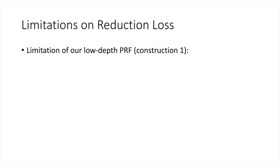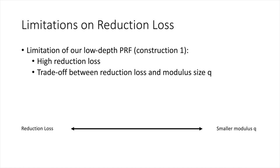Before I describe the construction, let me briefly comment on a limitation of our first low-depth PRF. In order to prove that our construction is secure, we provide a reduction from LWE—any adversary that breaks our PRF can be translated into an attacker that breaks LWE. However, the success probability of our reduction will be quite low—barely noticeable when the modulus q is set to be polynomial in the security parameter. More precisely, we get a trade-off between the reduction loss and the size of the modulus q.